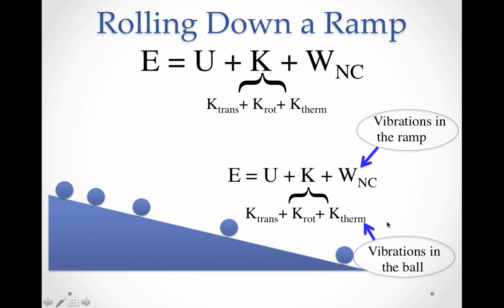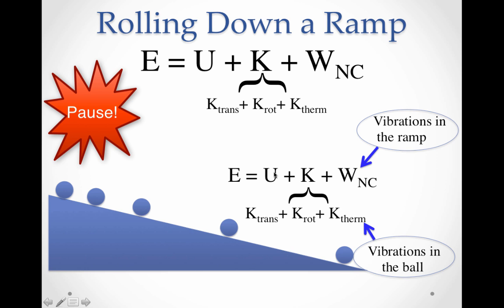Looking at our model, the vibrations in the ramp — and really also in the air — represent non-conservative work, and the thermal part represents the vibrations in the ball. The obvious ones are the translation and rotation of the ball. But the total energy remains the same — it's just going to different parts.